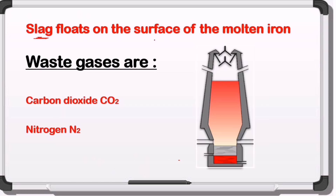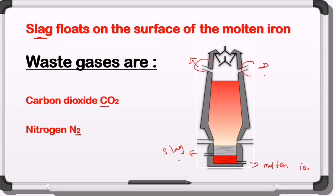Slag floats on the surface of the molten iron because it is lighter — less dense. So from our diagram: the more dense layer — molten iron — is at the bottom and extracted from the lower exit, while slag is extracted from the upper exit. The waste gases — carbon dioxide and nitrogen gas — leave through the top exit. The two openings at the bottom supply hot air to start the combustion reaction.